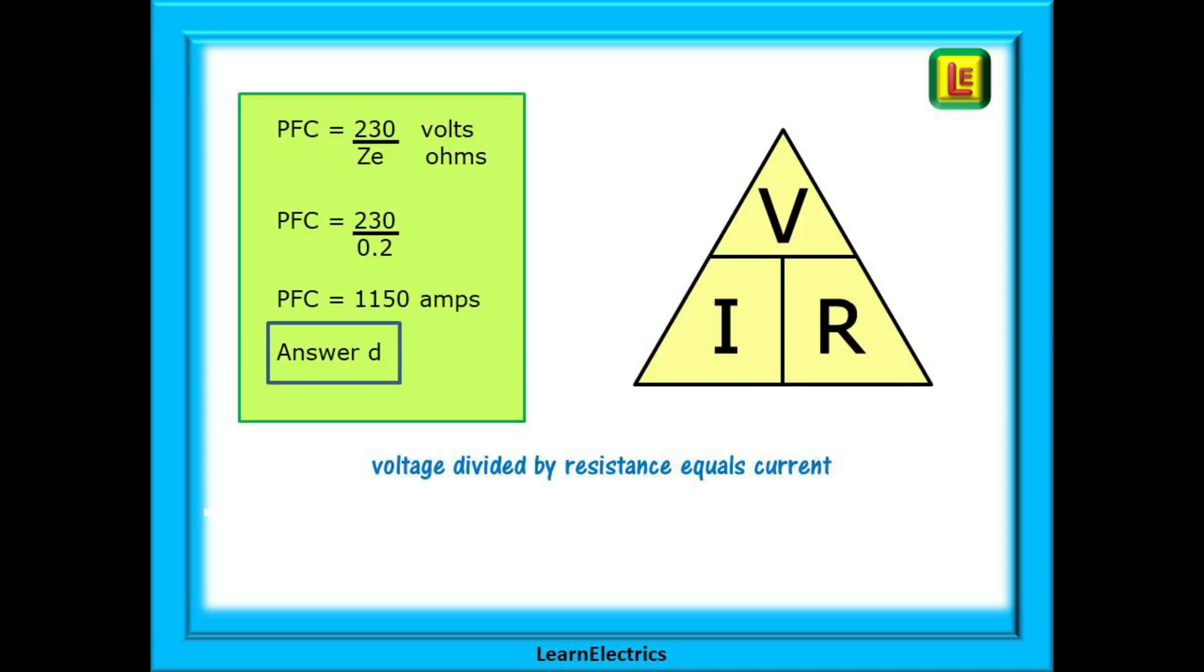This is a very straightforward ohms law calculation. PFC is a current. The ohms law triangle shows us the voltage divided by resistance will give us the current. 230 volts nominal voltage divided by 0.2 ohms is 1150 amps or 1.15 kilo amps. So the answer is D.